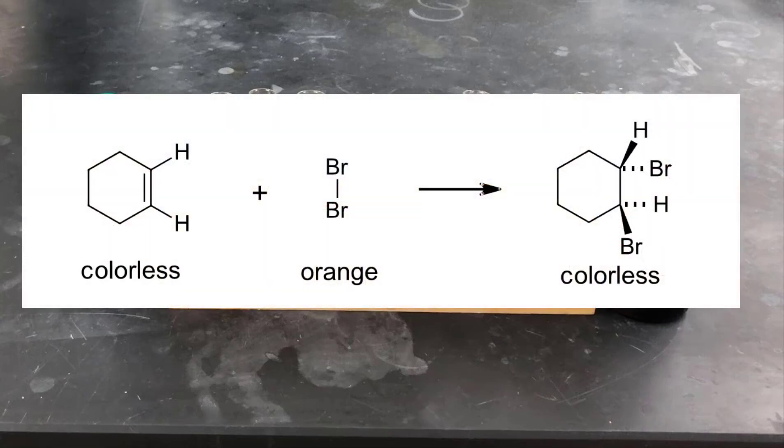In the first reaction, the alkene reacts with orange bromine solution to give a colorless addition product. The color change here that you'll notice is orange color disappearing and becoming colorless. This indicates the presence of an alkene.